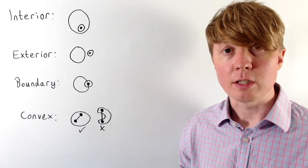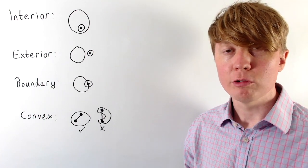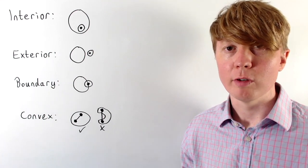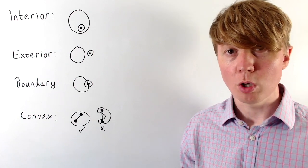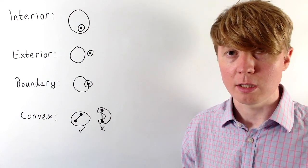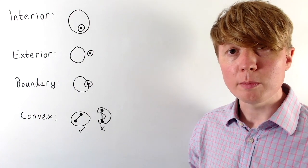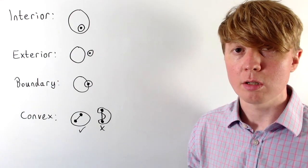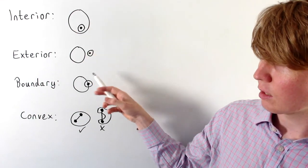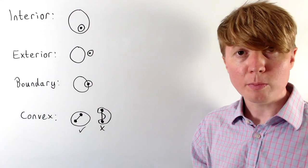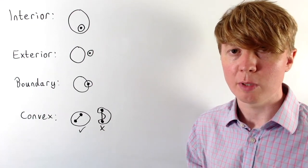We're going to look at a neat little exercise to do with interior and boundary points of convex sets in R2. So we're just working in 2D Euclidean space here. We'll start off just with some definitions — the definitions of interior, exterior, and boundary points specific for 2D Euclidean space.